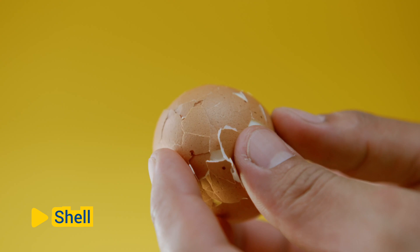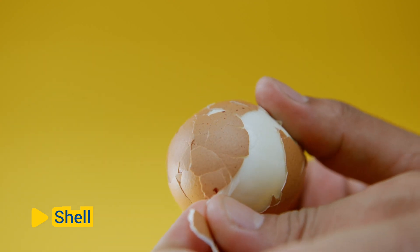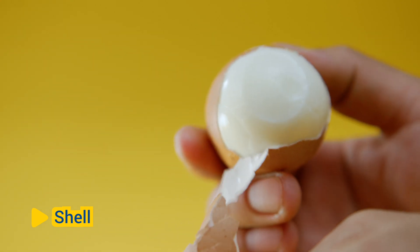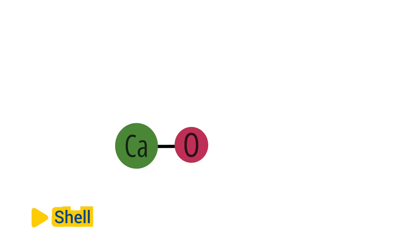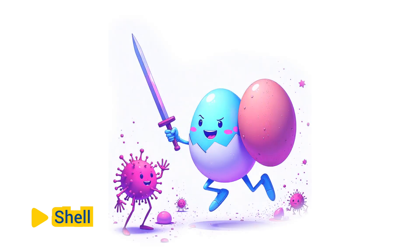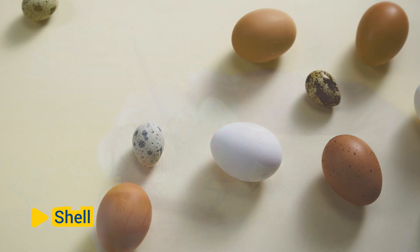Shell. The outermost layer of the egg is the shell, which provides protection and support for the developing embryo inside. The shell is typically composed of calcium carbonate and is porous, allowing for gas exchange while preventing the entry of harmful microorganisms. The color and texture of the shell can vary depending on the species and environmental factors.